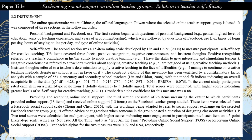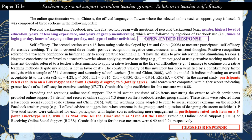For the second indicator — self-efficacy — participants rated each item on a Likert-type scale from one as totally disagree to five as totally agree. Similarly, the third indicator — providing and receiving online social support — has participants rate each item on a five-point Likert-type scale with one as not true at all to five as true all the time. So, as highlighted, this is why the first indicator uses open-ended response, and the second and third indicators use the closed response.